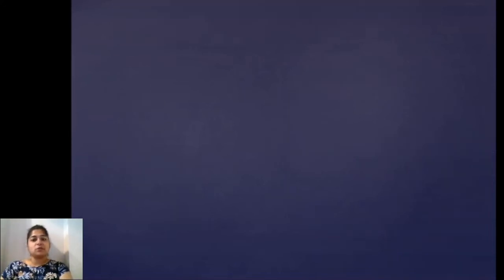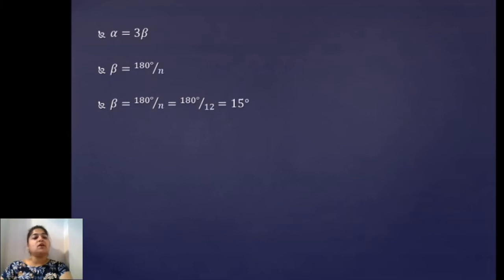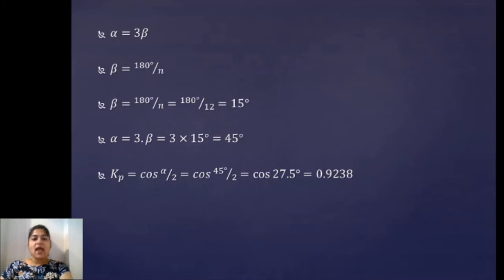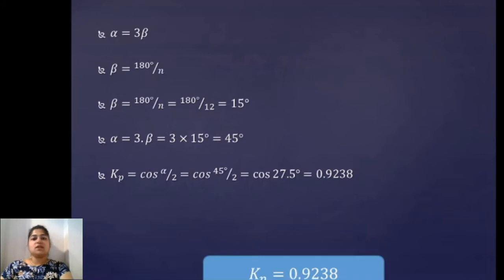So alpha equals thrice beta because the coil is shorted by 3 slots. Beta is 180 divided by N, and N is 12 for this problem, so beta equals 15 degrees. Substituting in alpha: alpha equals 3 times 15 which is 45 degrees. Substituting the value of alpha in the pitch factor equation — kp equals cosine of alpha by 2 — we get kp equals 0.9238. This is the required value of pitch factor for this problem.